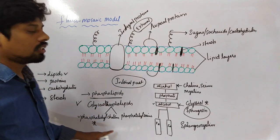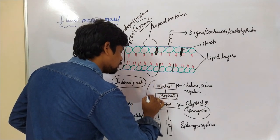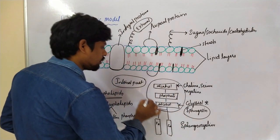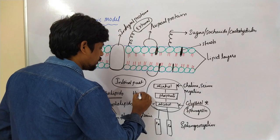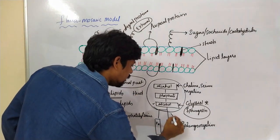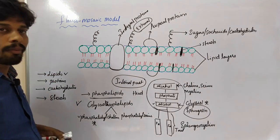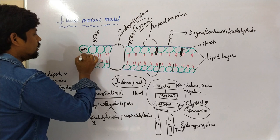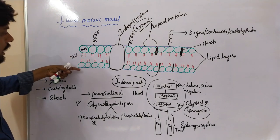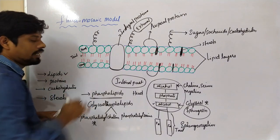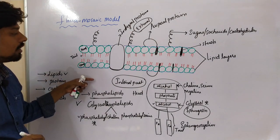This is all about phospholipids and their structure. You can observe a knob-like structure called the head, and the tail. The head is exposed outside and also on the internal side of the plasma membrane.